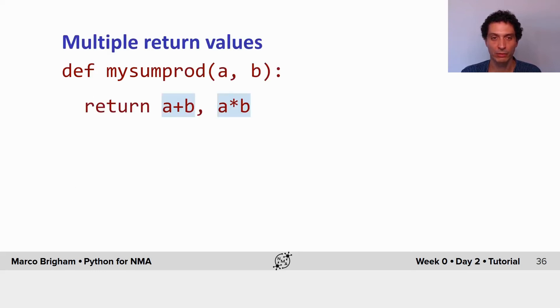Now let's keep in mind that functions can have multiple return values. So in this case I define a function that takes two arguments and returns their sum and their product.